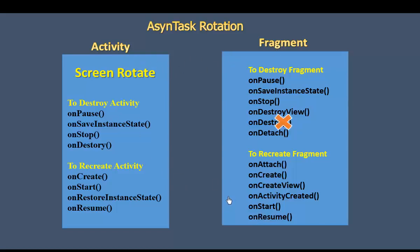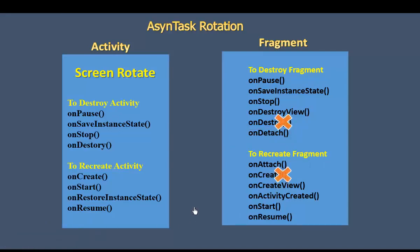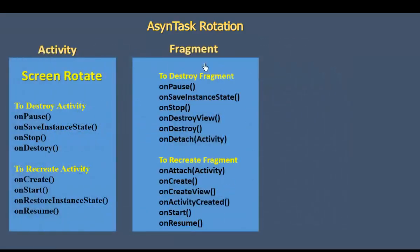The activity contains the fragment. When the activity is destroyed, the fragment is destroyed along with it. The destroy method is called — onDestroy. And then onCreate is called again. The onActivityCreated method is also called. Activity and fragment: activity destroy method, recreate method, fragment destroy method, retrieve method, activity destroy method.